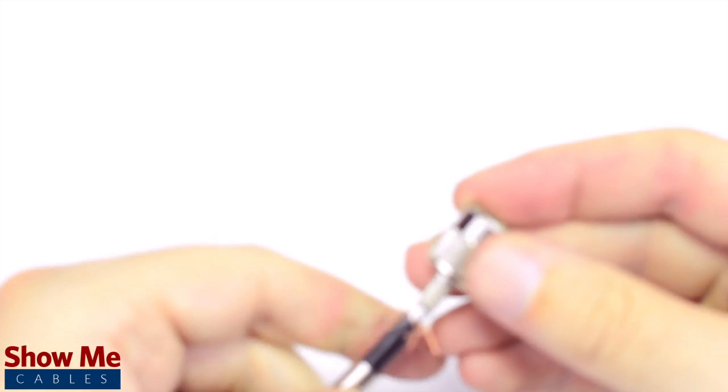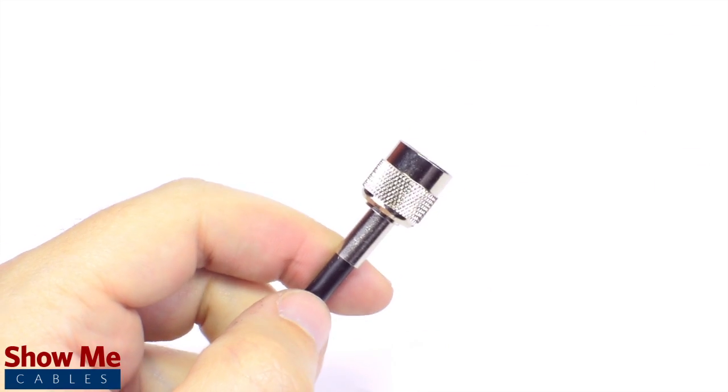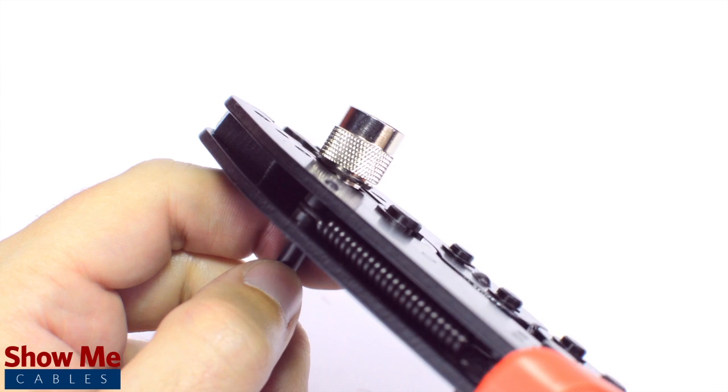Then slide the ferrule up to the base of the connector, folding the shield with it. Crimp the ferrule under the outer jacket to complete termination.